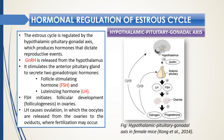Now let me talk about the regulation of the estrus cycle. This cycle is regulated by the hypothalamic-pituitary-gonadal axis. From the hypothalamus, GnRH — gonadotropin-releasing hormone, a decapeptide — is secreted and sends a signal to the anterior pituitary for secreting and releasing two important gonadotropins: follicle-stimulating hormone and luteinizing hormone.